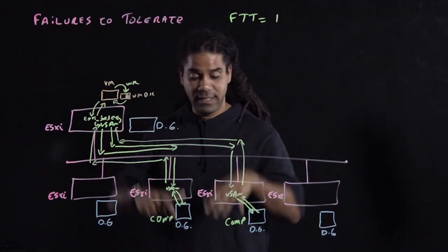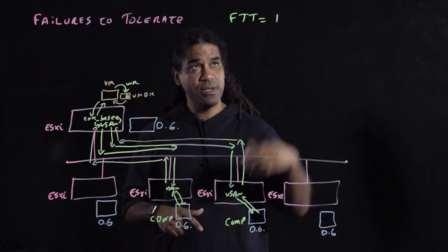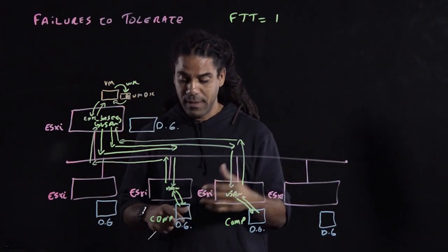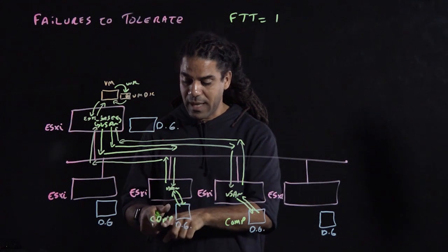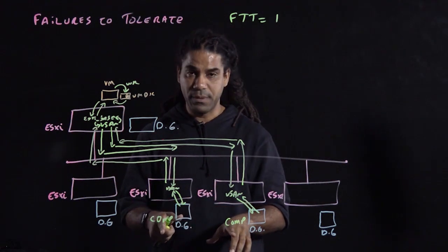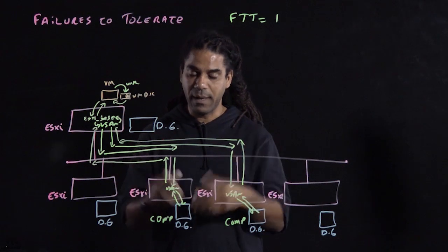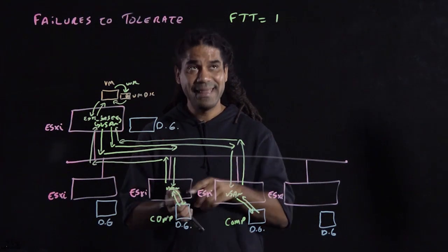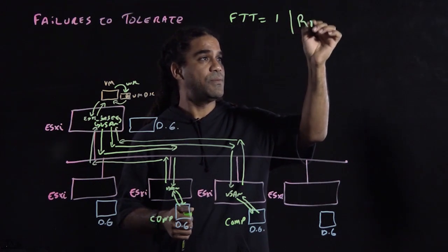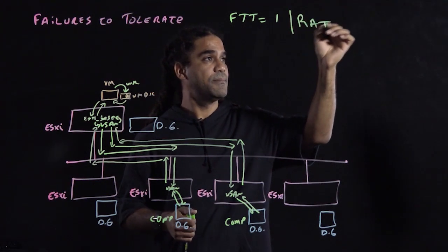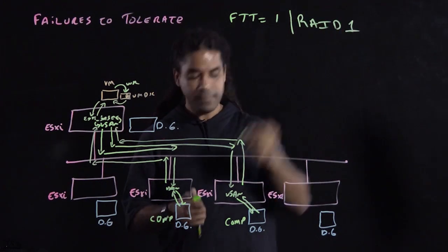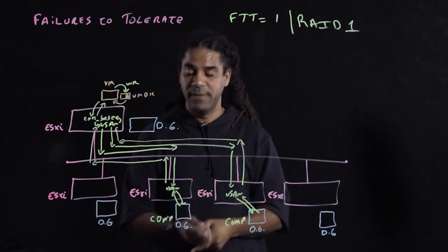In this particular example, we did an FTT equals to one. But the method that we used was to have a duplicate of the component — two copies of it. This is using a method of RAID1. It's a mirror.